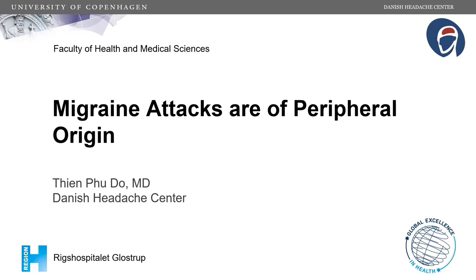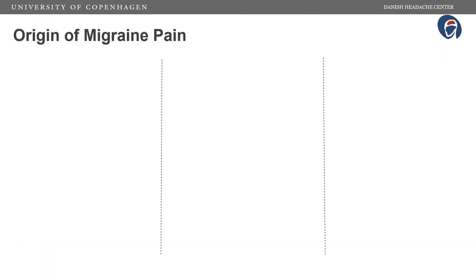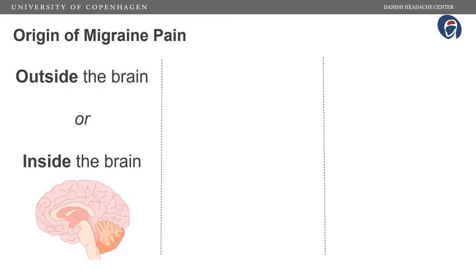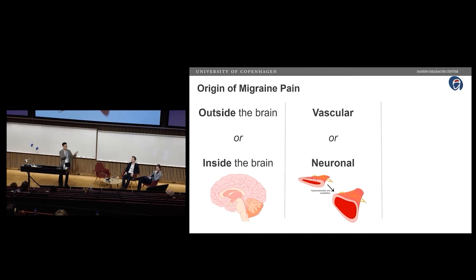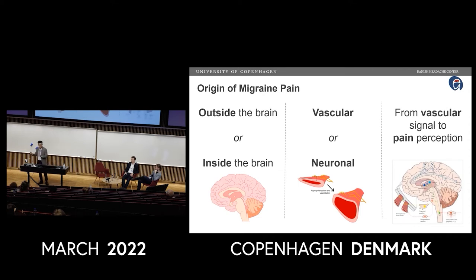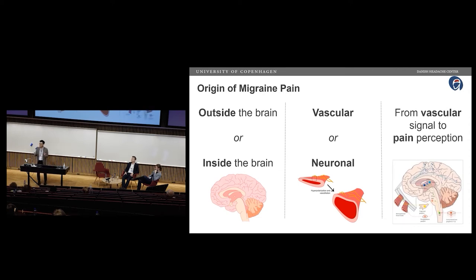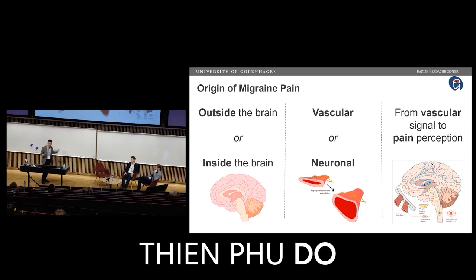I'm going to convince you that migraine attacks are of peripheral origin. When we talk about the origin of migraine pain, the discussions usually relate to three topics: does the migraine attack happen outside or inside of the brain? I will argue that it happens outside of the brain. Then we discuss what tissue we're working with — vascular or neuronal — and how we go from vascular to actual pain perception.